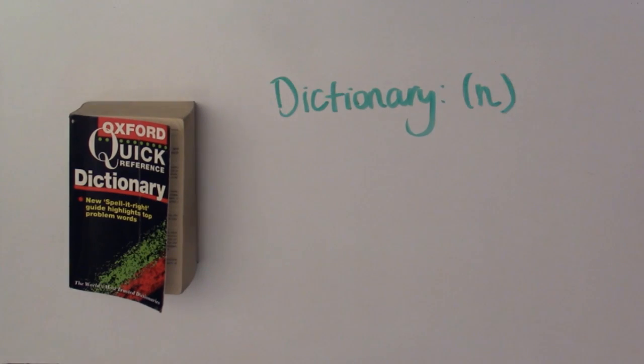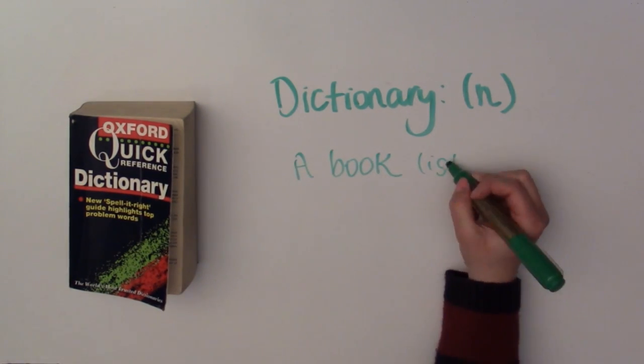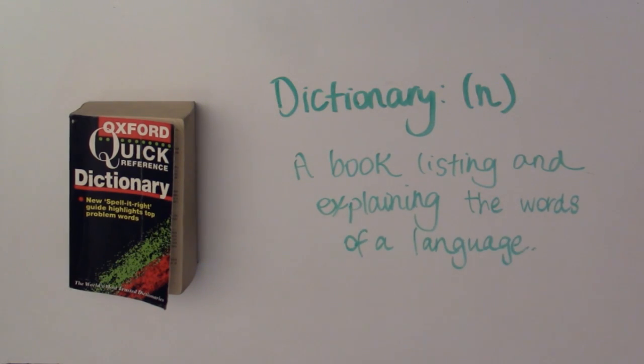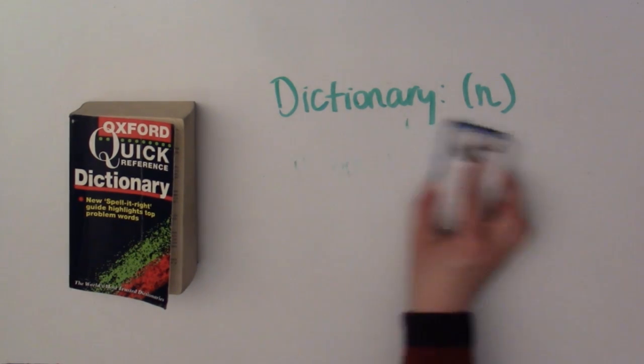So the first question is, what is a data dictionary? Let's first talk about what other kind of dictionaries there are. The definition of a dictionary is a book listing and explaining the words of a language.